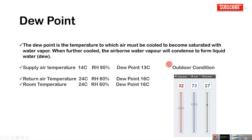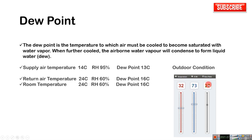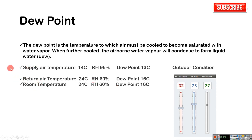Look at this outdoor air condition example. The dew point temperature: outdoor temperature is 32°C, relative humidity is 73%, and the dew point is 27°C. If this air is cooled below 27°C, there will be condensation. Think about how a juice supply at a temperature of 14°C and RH 95% — the dew point temperature is 13°C.